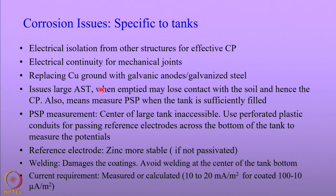Storage tanks are earthed using copper, but whenever you go for cathodic protection systems, these are replaced with galvanic anodes or galvanic steels. There are especially issues associated with above ground storage tanks because when you empty the tank, the contact between the soil and the tank bottom becomes loosened, making it hard to measure the tank-to-soil potentials. So tank-to-soil potentials are generally measured only when the tank is completely filled up.